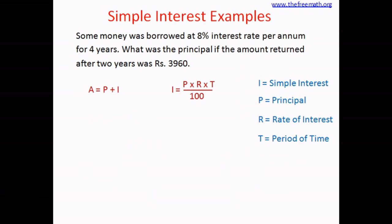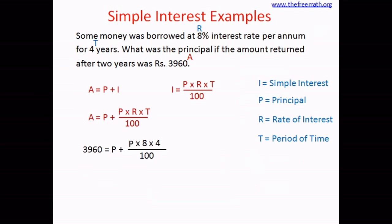Let's substitute the value of I into the first formula: A equals P plus PRT divided by 100. From the problem, R equals 8, T equals 4, and A equals 3,960. Putting all these values into the formula gives: 3,960 equals P plus P multiplied by 8 multiplied by 4 divided by 100.